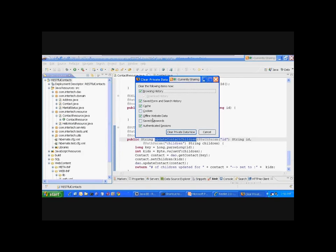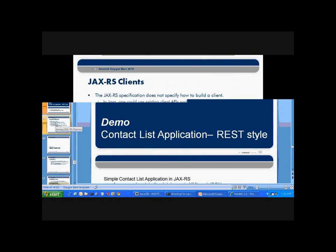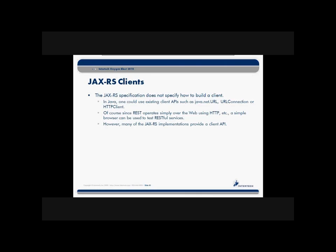Let me take us back to our presentation and wrap up in the next 10 minutes with a couple of other items. With the Jersey implementation, there's also a client API. The JAX-RS specification doesn't specify how to build a client. So if you're going to build a Java client to talk to a JAX-RS application, you could just use plain old Java.NET URL and URL connection classes and HTTP client classes to communicate with this web service. After all, it is just HTTP communication, and many of us have been doing that with websites and screen scraping for years.